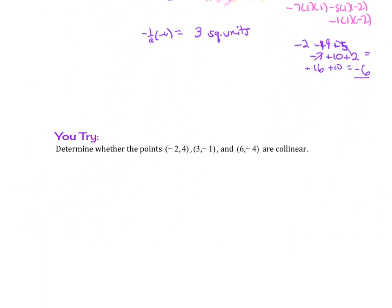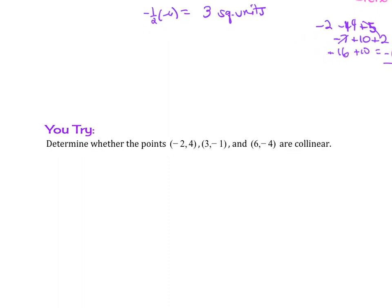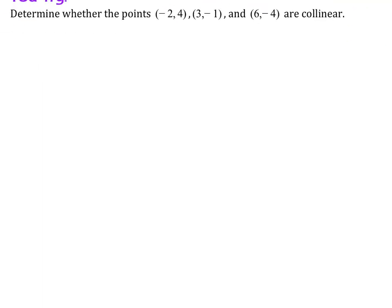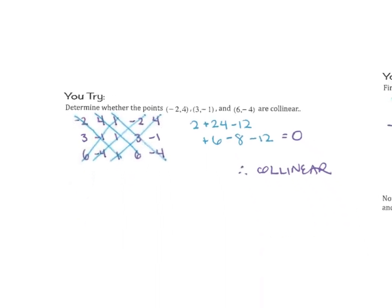Now try this one out below. Determine whether the points negative 2, 4, 3, negative 1, and 6, negative 4 are collinear. So if we tried it out, you would find that, yes, it is collinear, because you would find that the determinant is 0, so they are collinear points.